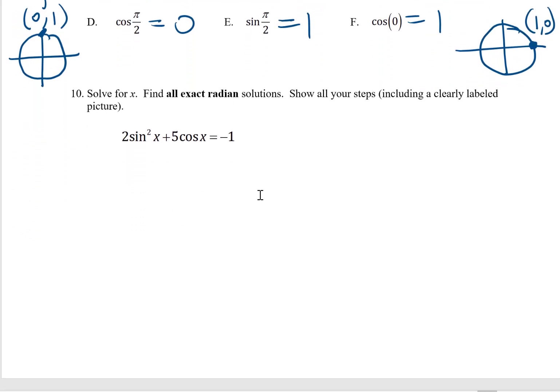And then lastly, number 10, another equation to solve. Again, it looks a little bit complicated. I've got a sine squared, and then I've got a cosine. I don't see any easy factoring, so I think what I'm going to have to do is switch over to one or the other. The easiest one to pick, I think, would be to switch to cosine, because in place of sine squared, I can write 1 minus cosine squared x from the Pythagorean identity.